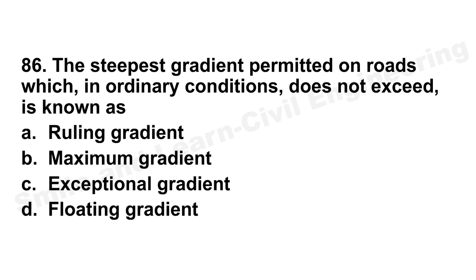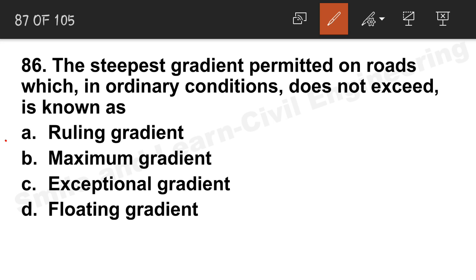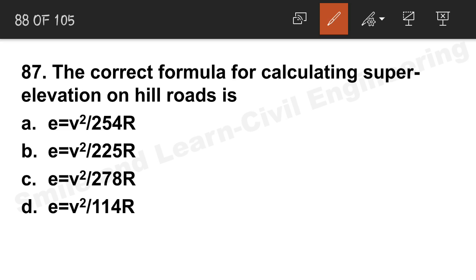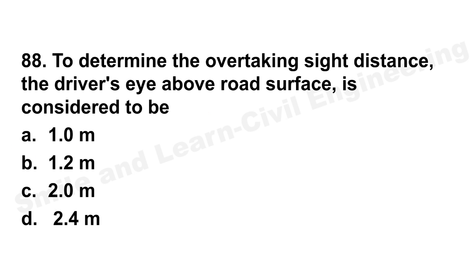Question 86: Steepest gradient permitted on roads under ordinary conditions should not exceed the ruling gradient. Option A is the correct answer. Question 87: Correct formula for calculating super elevation on hill roads is V²/225R. Option B is the correct answer.